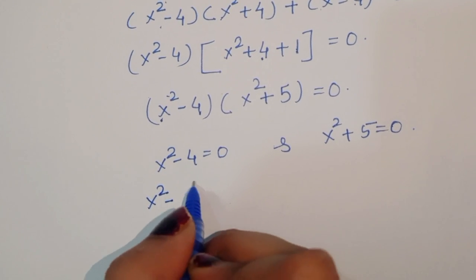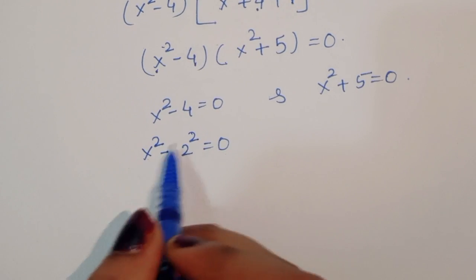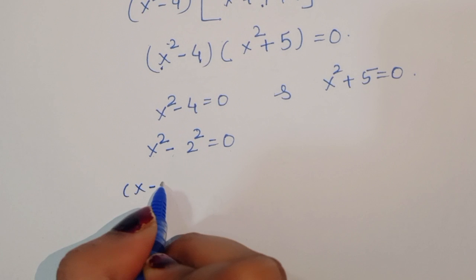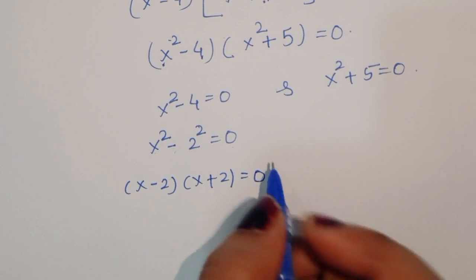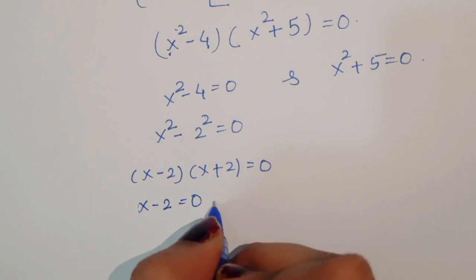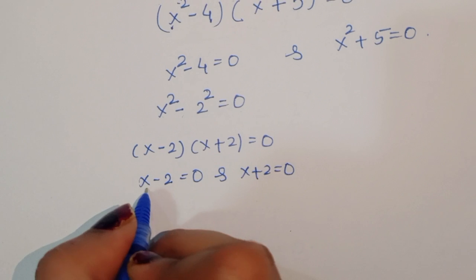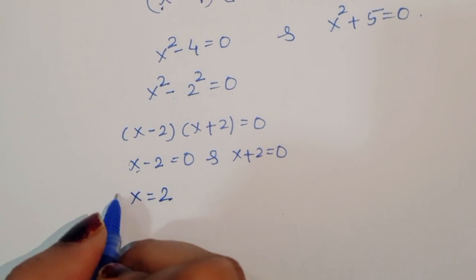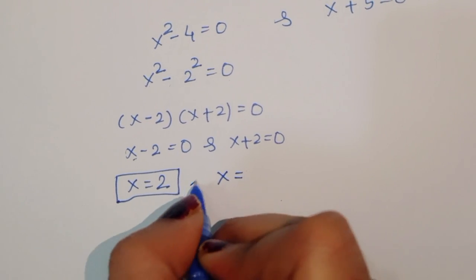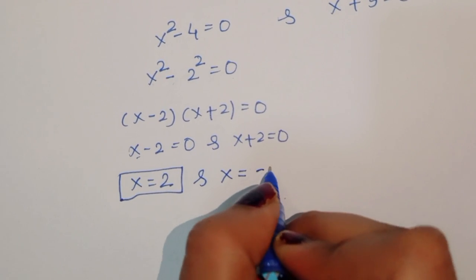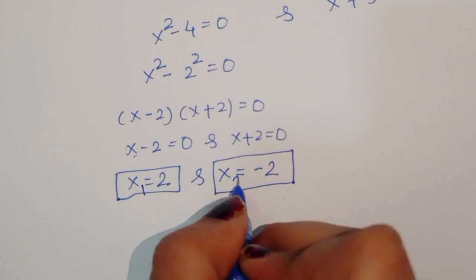From x² - 4 = 0, using a² - b² = (a-b)(a+b), we write (x - 2)(x + 2) = 0. So x - 2 = 0 gives x₁ = 2, and x + 2 = 0 gives x₂ = -2. These are the first two real solutions.